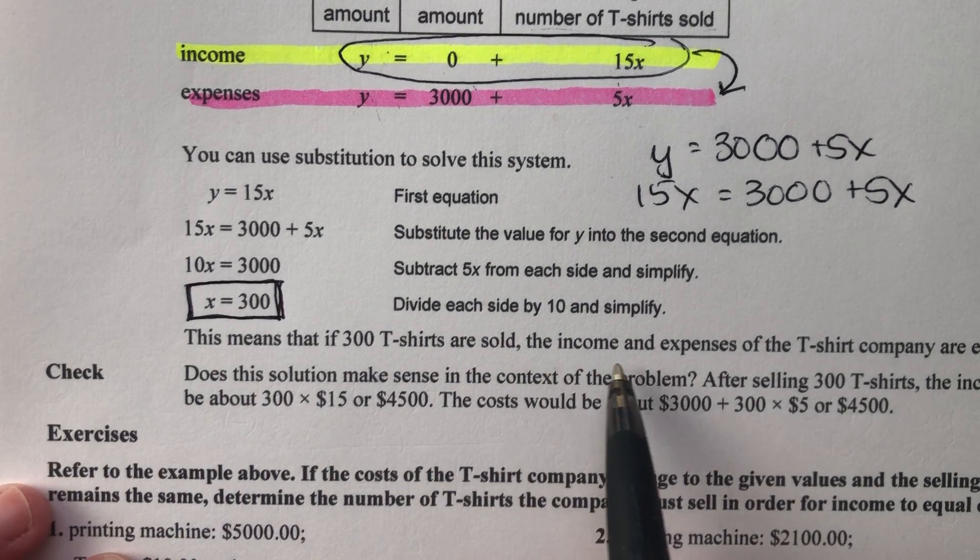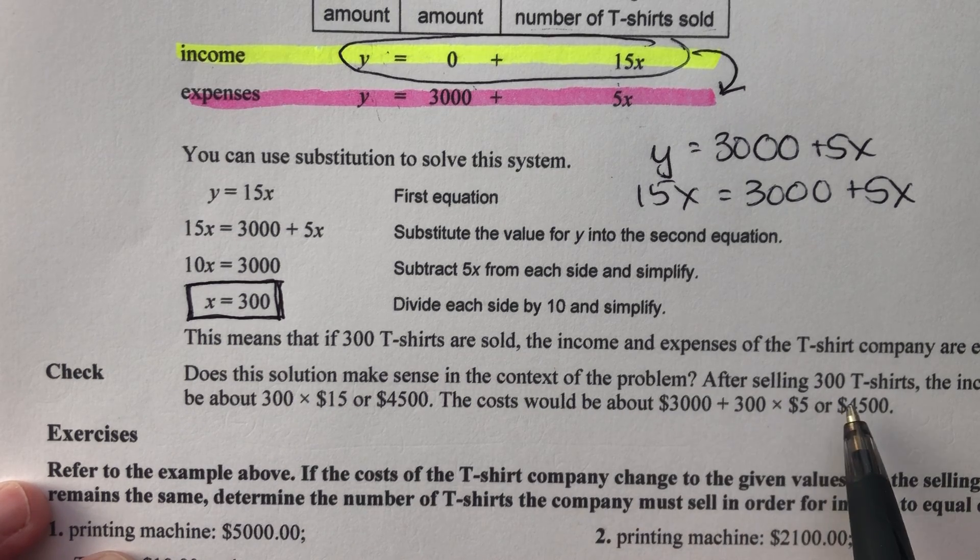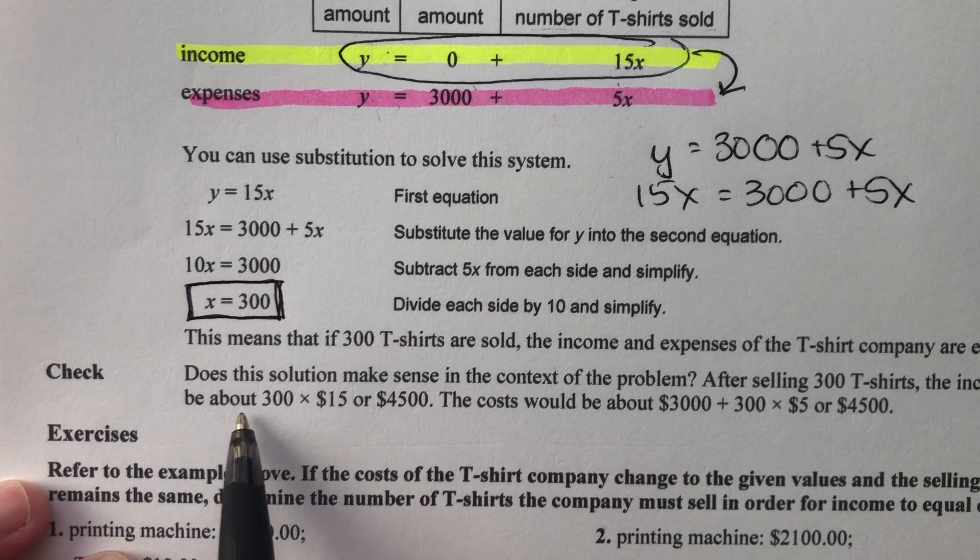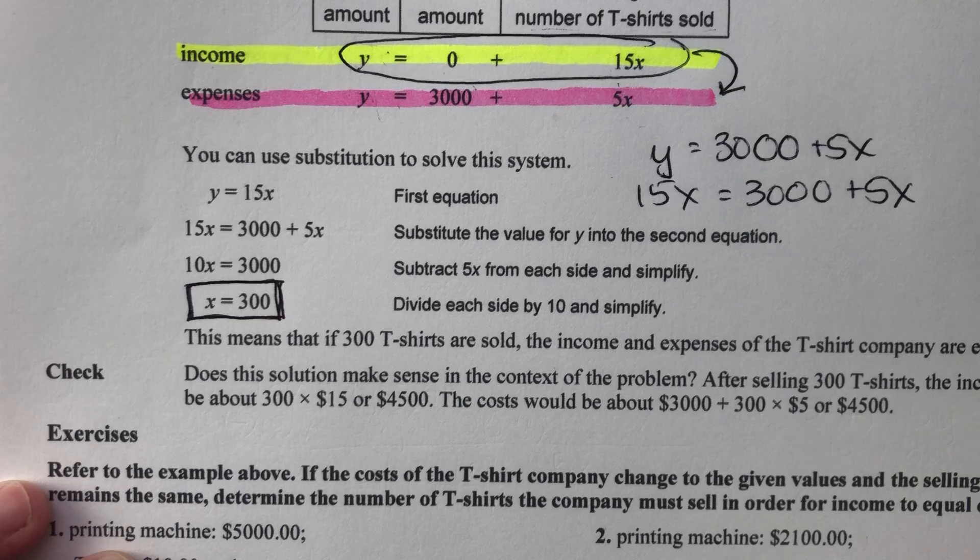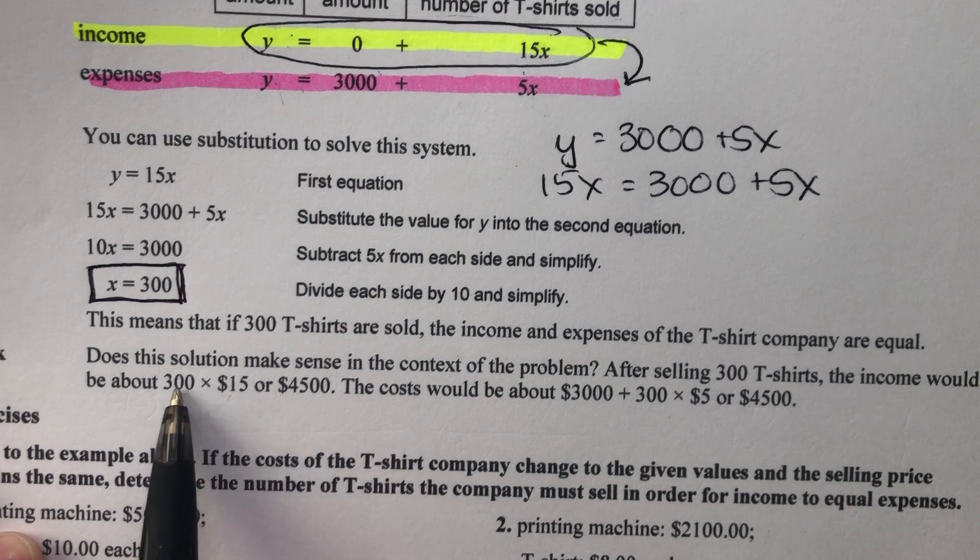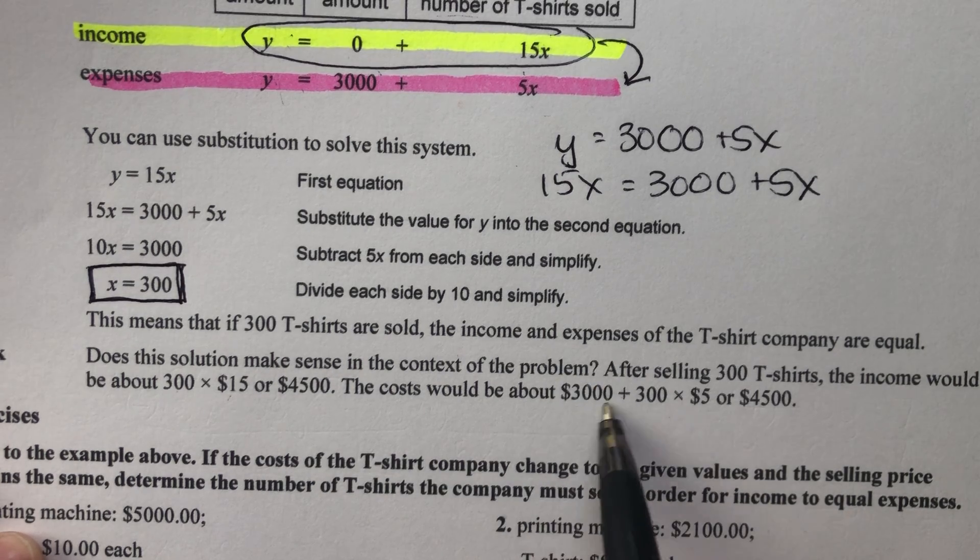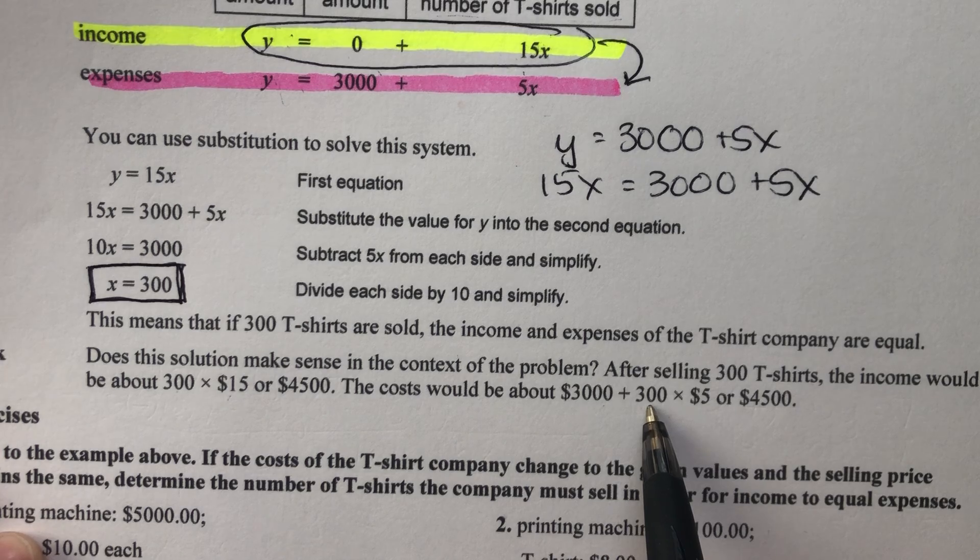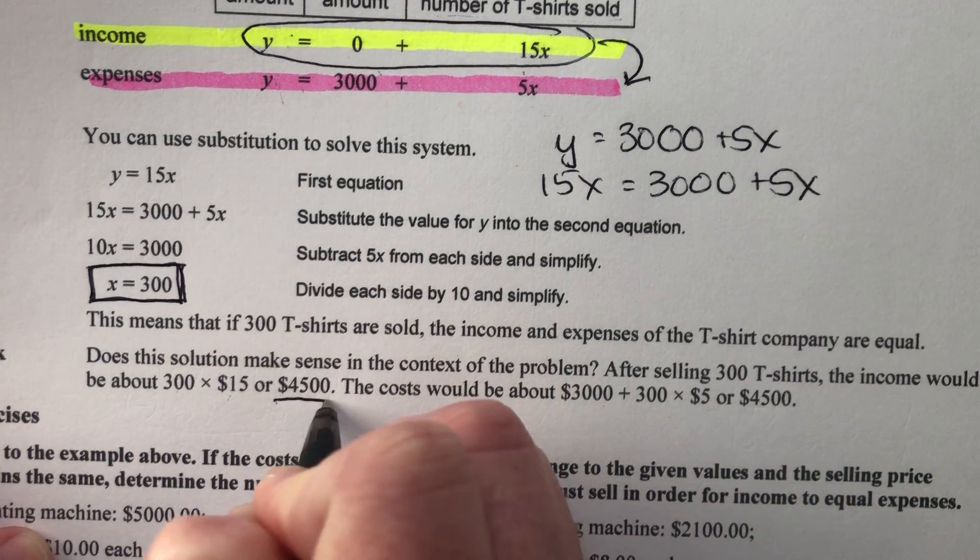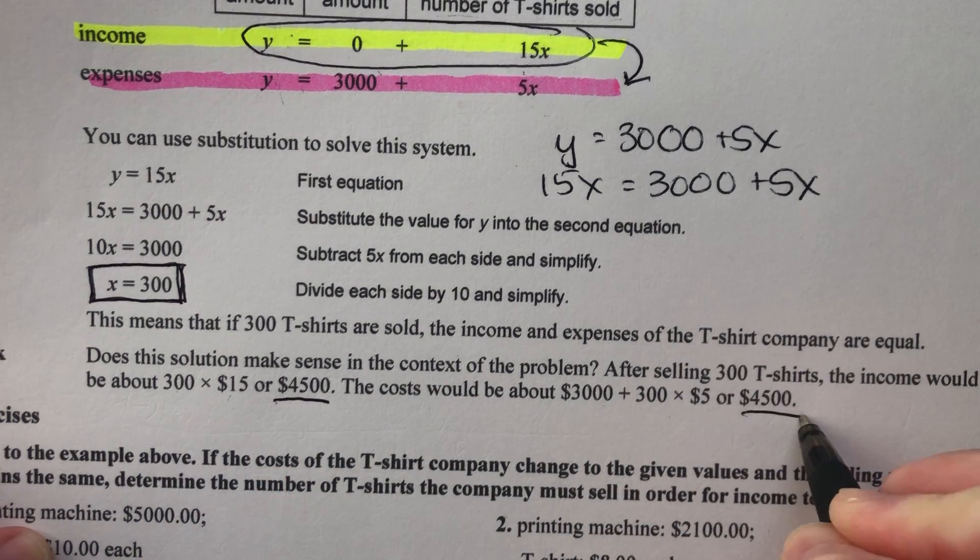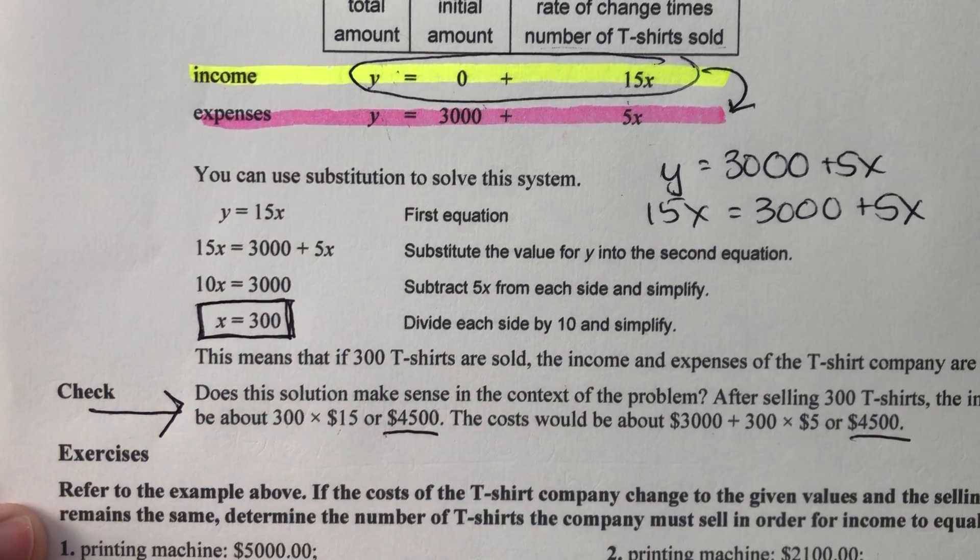So we're going to have to make and sell 300 shirts before we break even, before the money we made matches the money we spent. So if 300 shirts are sold, the income and expenses are equal. Does the solution make sense in context of the problem? After selling 300 t-shirts, the income would be 4,500. The cost would be 4,500. So they'd be equal. $15 a shirt times 300 shirts is 4,500. The cost was 3,000 for the machine plus $5 per shirt times 300 shirts, 4,500 total.